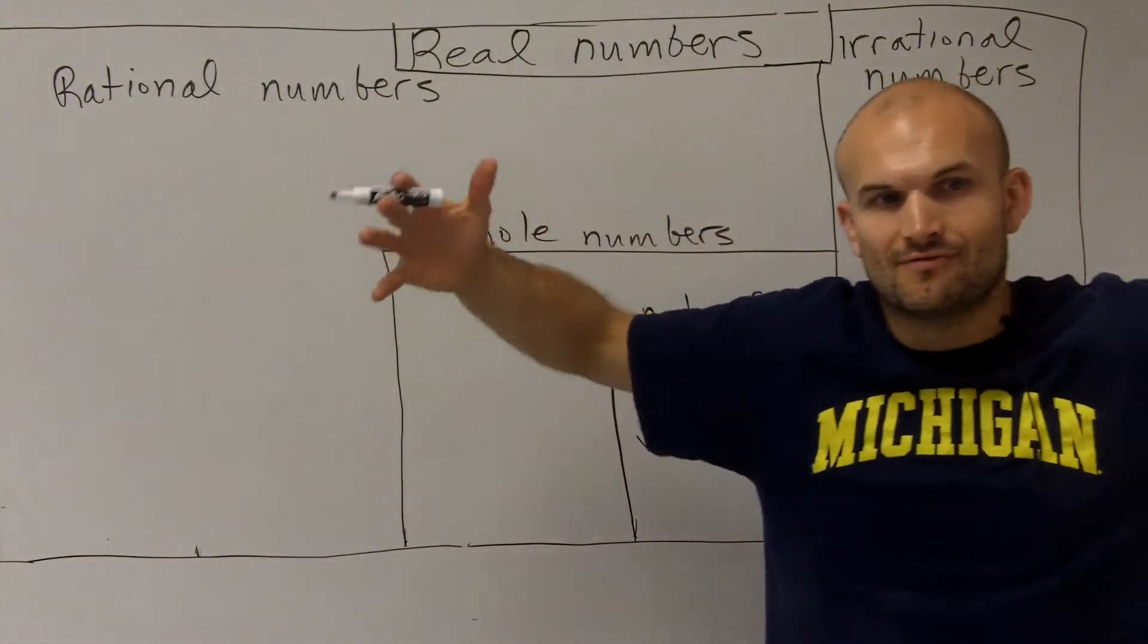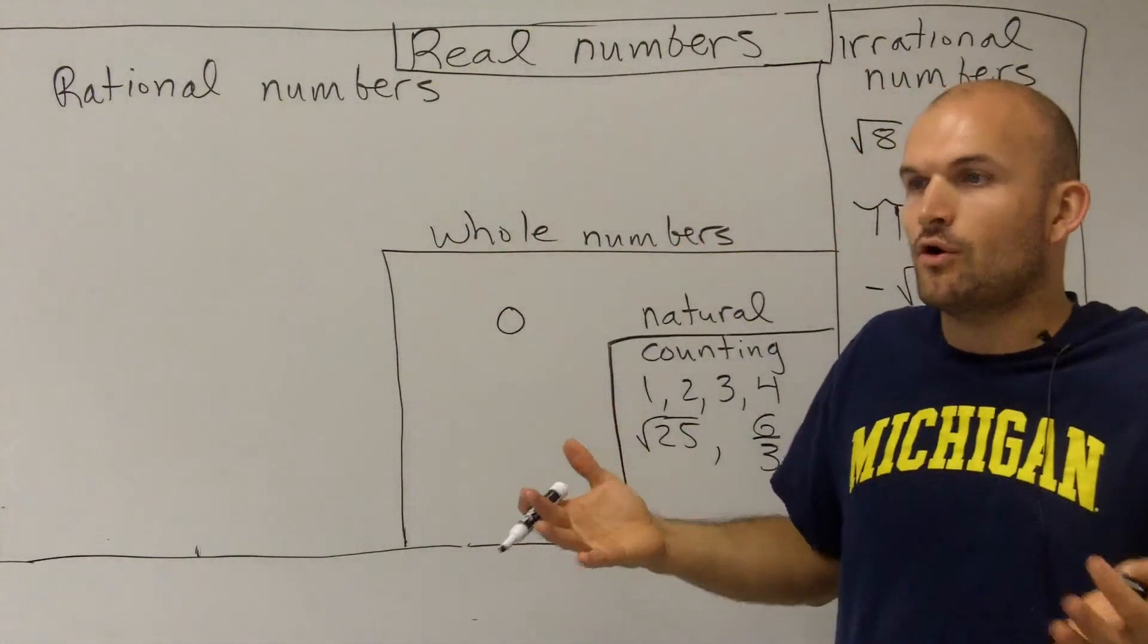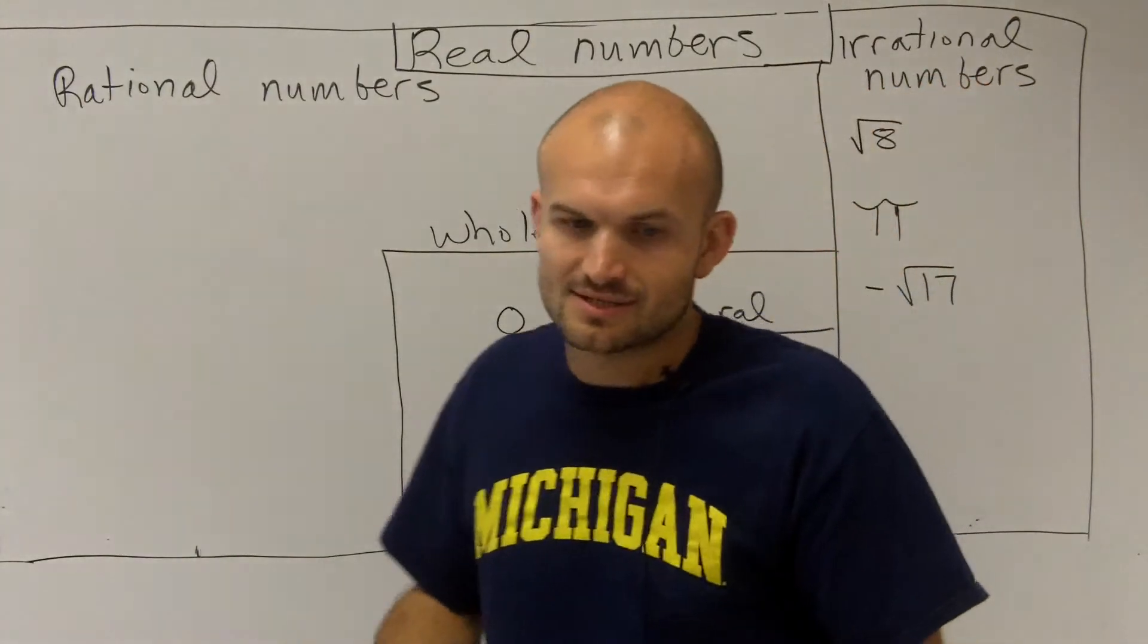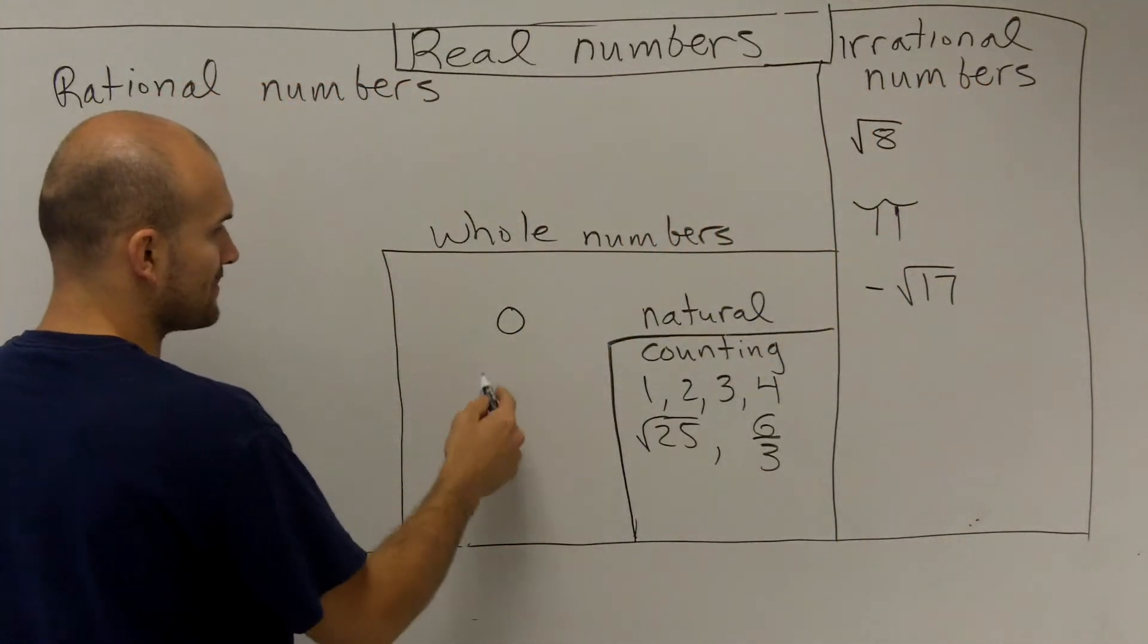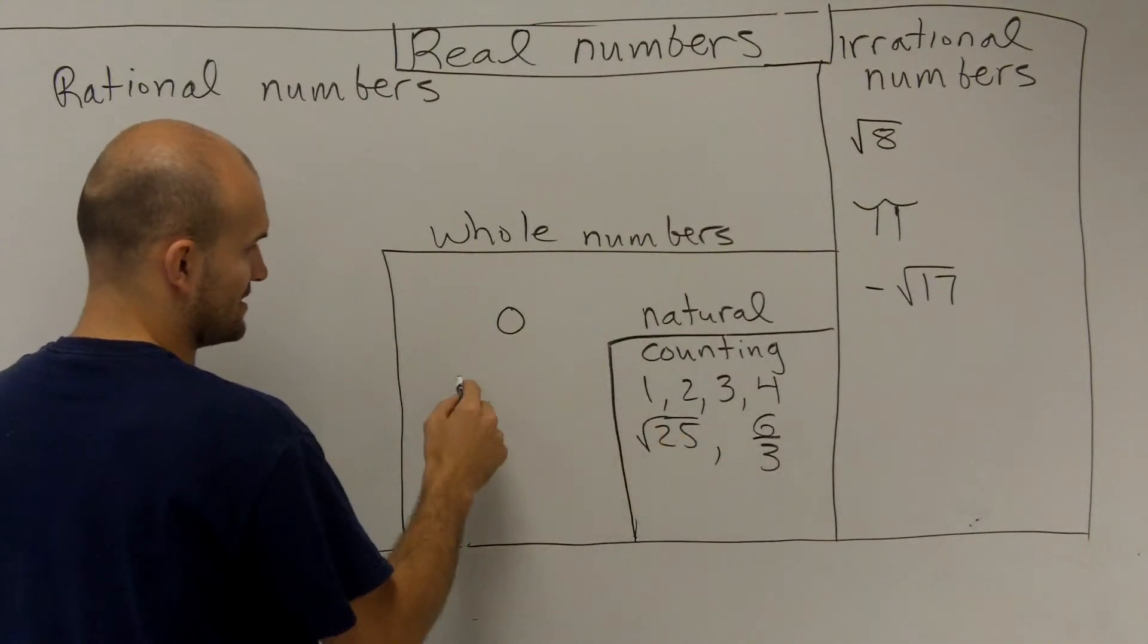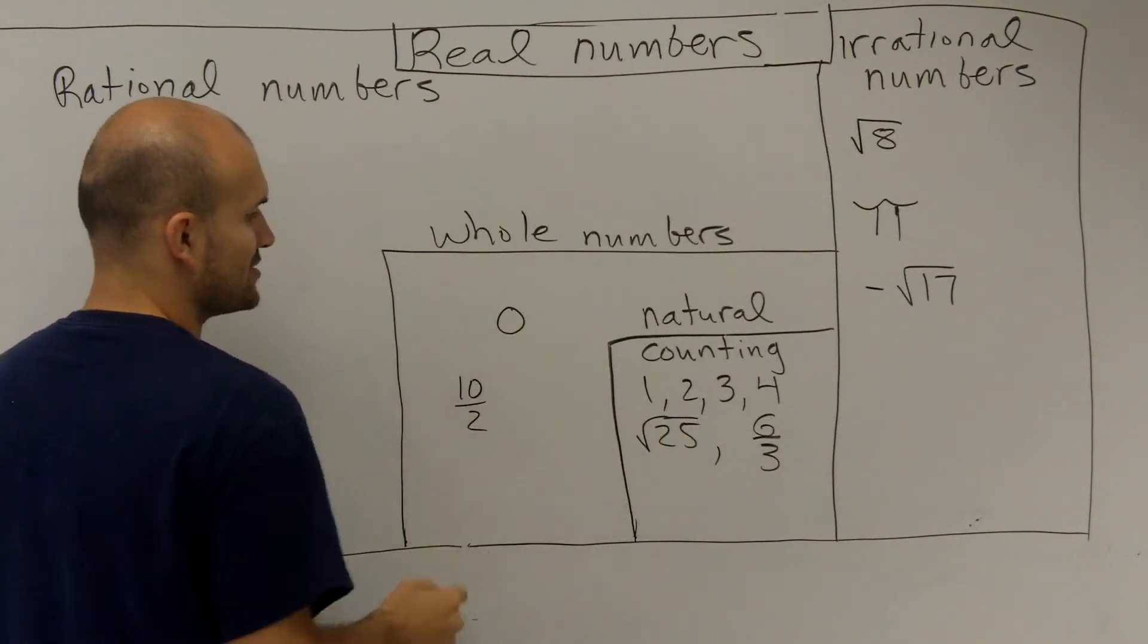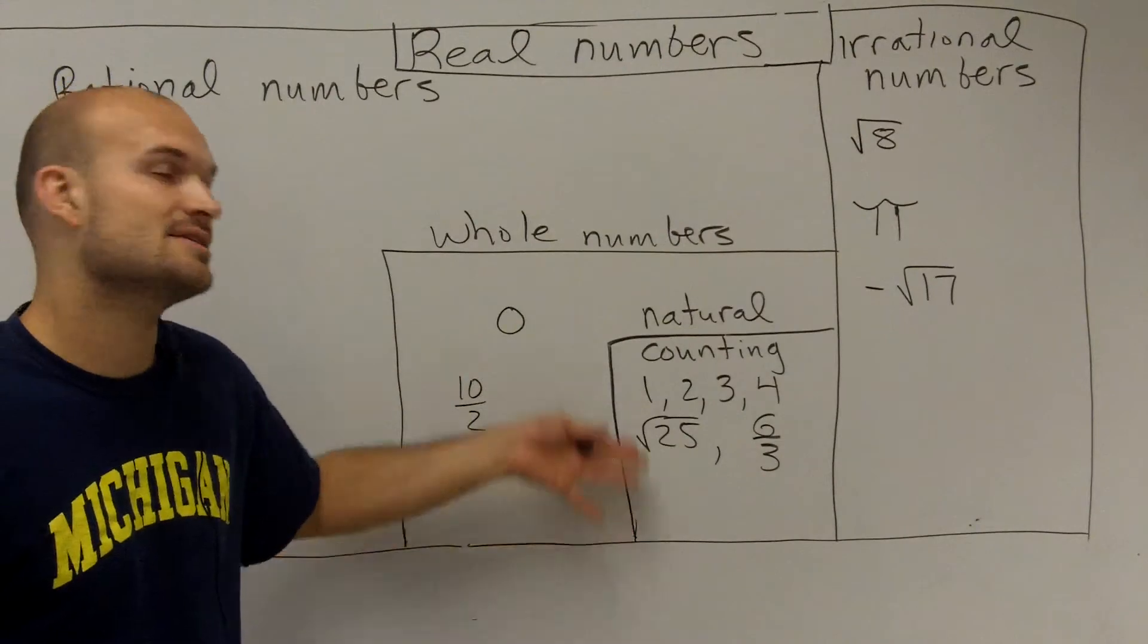Well, whole numbers, you just think of your whole things. You have whole parts of things. So as long as you can still write it as a fraction like these, 10 divided by 2, that's still just going to produce a positive whole number.